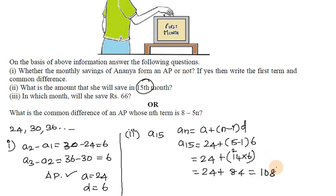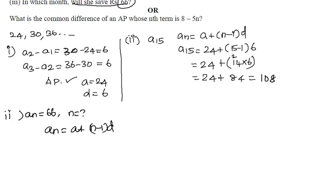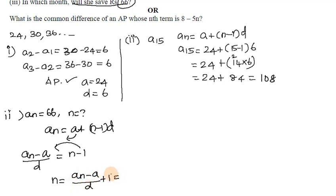Third subdivision: which month will she save 66? So An equals 66. Using the formula An equals A plus (n minus 1) into d, we solve for n: n equals (An minus A) divided by d plus 1, which equals (66 minus 24) divided by 6 plus 1.